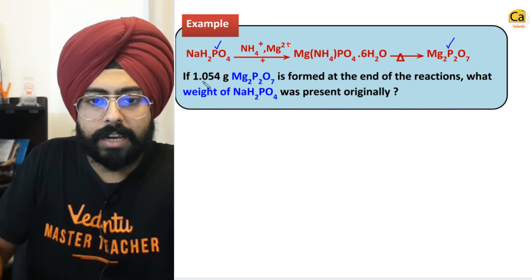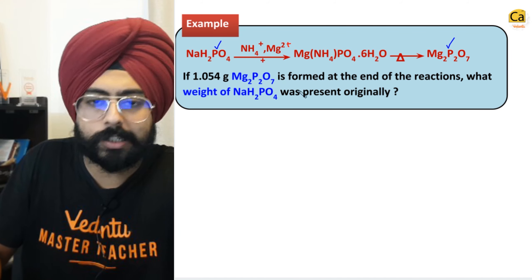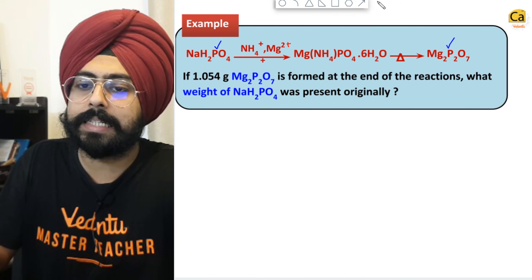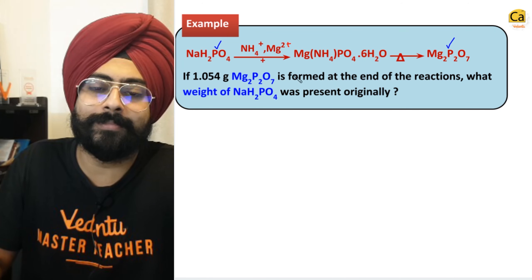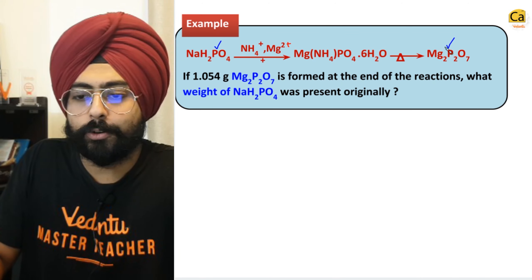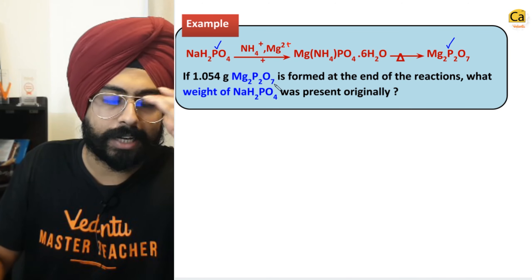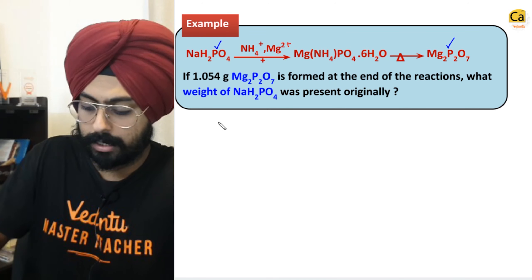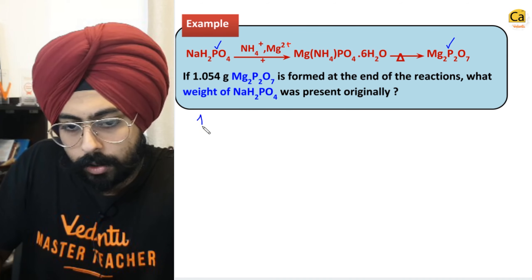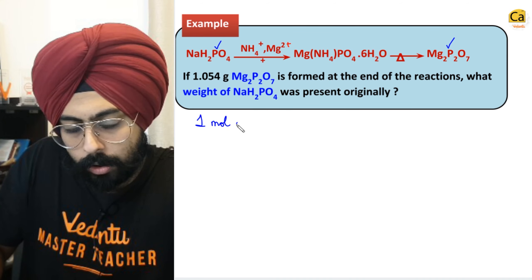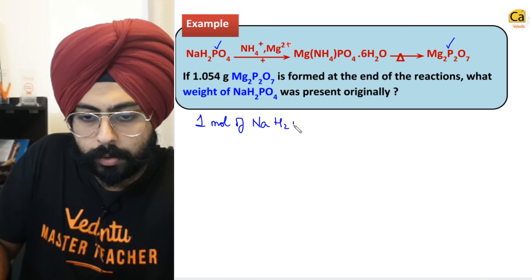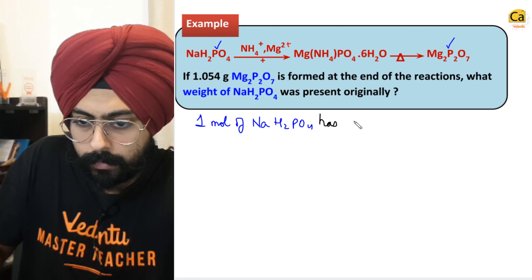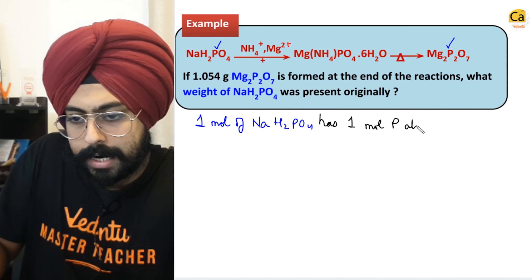The question says: if 1.054 grams of Mg2P2O7 is formed at the end of the reactions, what weight of NaH2PO4 was present originally? If you know their molar ratios, weight calculations can be done easily. One mole of NaH2PO4 has one mole of phosphorus atoms.